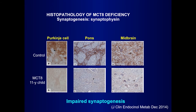Then synaptogenesis — another developmental pattern that is under thyroid hormone control. Here we look at the expression of synaptophysin, which is the major protein of the synaptic vesicles. This is in the cerebellum, the Purkinje cell. In the control, the synaptophysin is expressed in a punctate pattern showing the synaptic vesicles. But here we can hardly see any synaptophysin in the MCT8 11-year-old child.